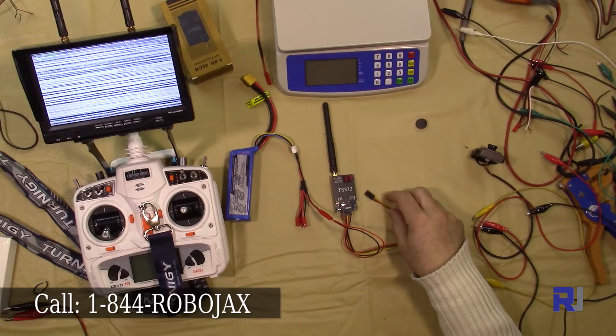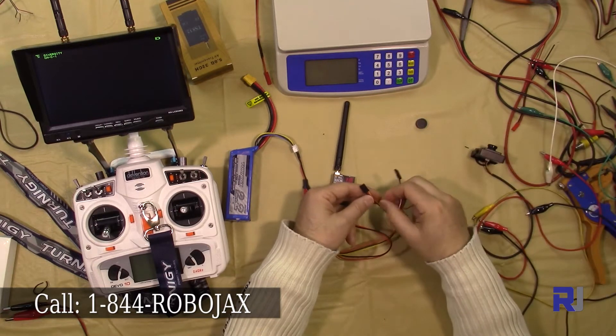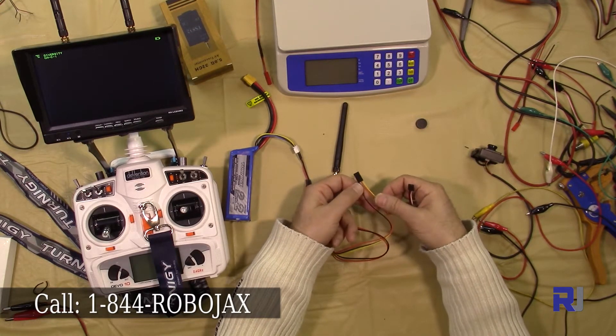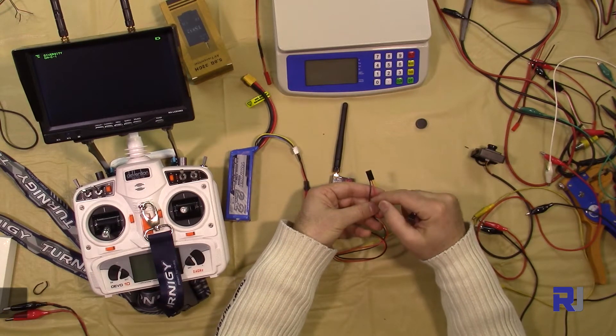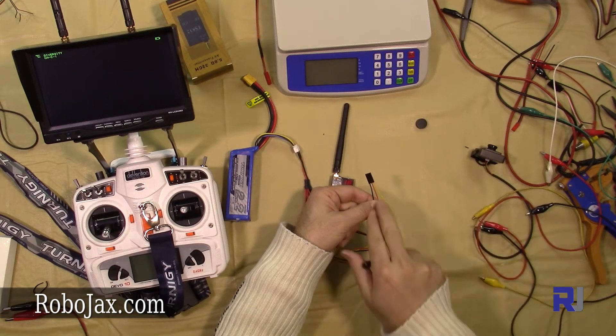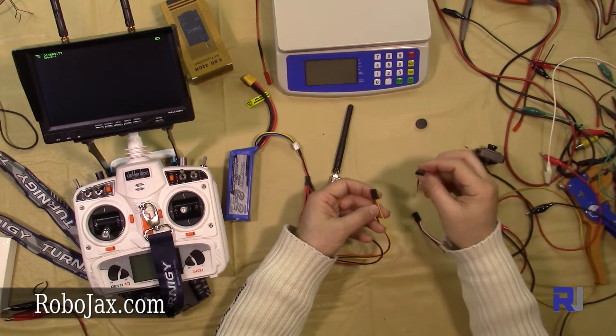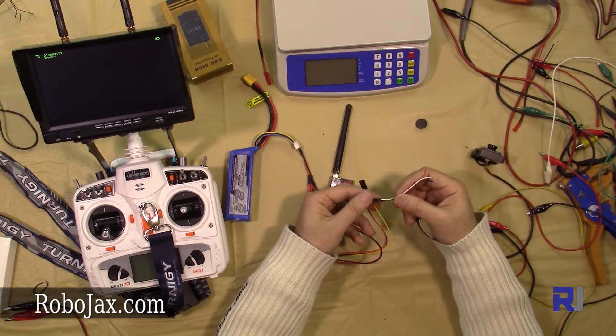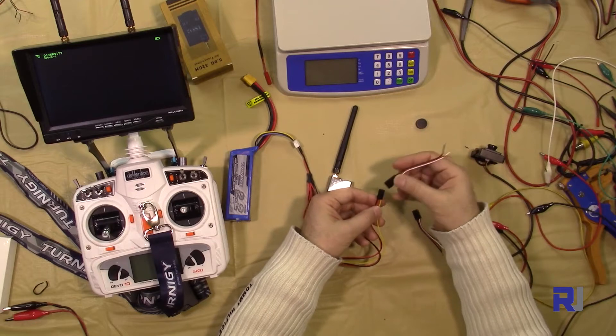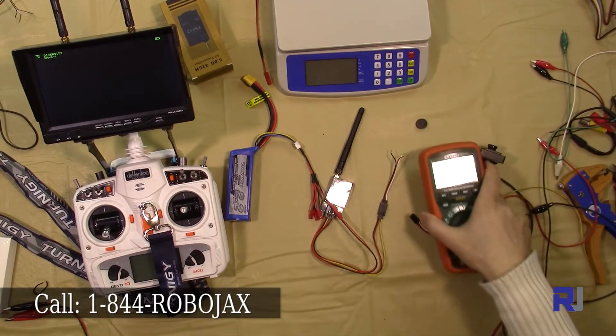Now let's connect the video. The transmitter also provides power to the camera. This black and red are the voltage output from the transmitter to your camera. This yellow is input. This red and black are output to the camera. I already have a JST cable and JR servo cable. This cable is for sale at robojax.com. Let me plug it in, black on this side.